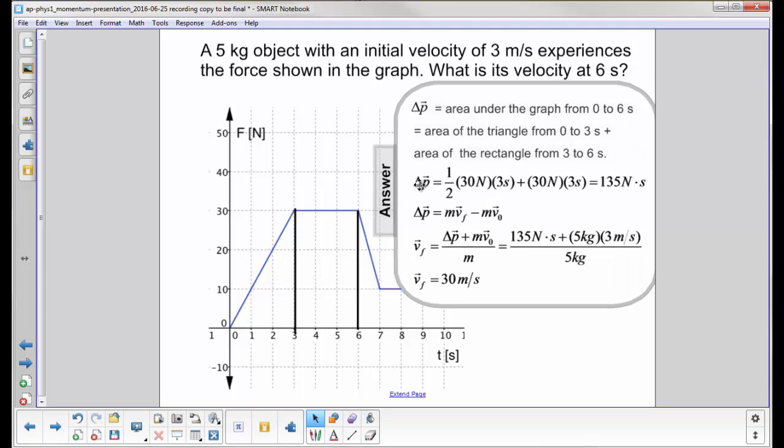So the change in momentum, the area of the triangle, is one half times 30 newtons times 3 seconds, one half base times height. And then we can find the area of this rectangle, that's just base times height. So we now have our change in momentum is 135 newton seconds.